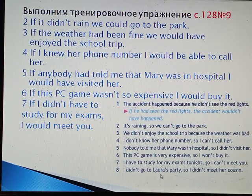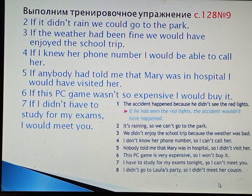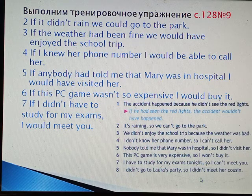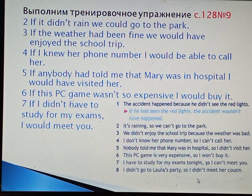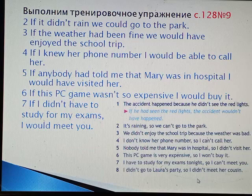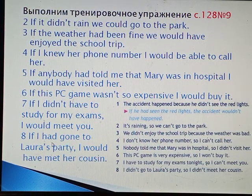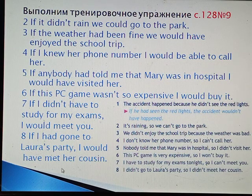I didn't go to Laura's party, so I didn't meet her cousin. Я не ходила на вечеринку к Лоре и не познакомилась с её двоюродным братом. А если бы пошла — то познакомилась. Но вечеринка закончилась. Мы работаем в третьем условном — воображаемая ситуация, относящаяся к прошлому, и ничего изменить нельзя. If I had gone to Laura's party, I would have met her cousin.